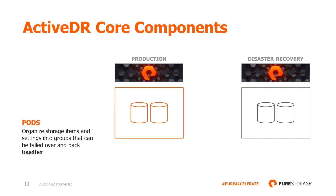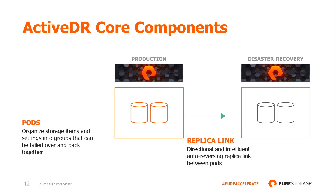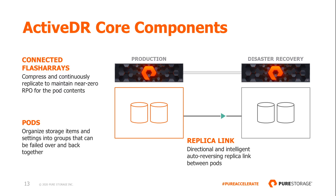There are three core components: connected FlashArrays, ReplicaLinks, and a storage management container called Pods. Pods organize storage items and settings — such as volumes, snapshots, protection groups, and configurations — into groups that can be failed over and back together. A replica link is a connection between a source pod on one FlashArray and a target pod on a second FlashArray. ActiveDR uses directional and intelligent auto-reversing replica links between pods. There's no additional licensing required to start using ActiveDR. Setup is a snap — just four simple steps to configure and you're ready to go in minutes.